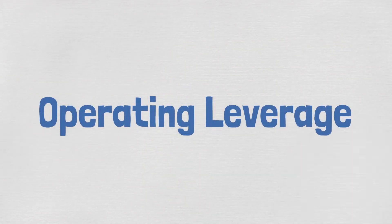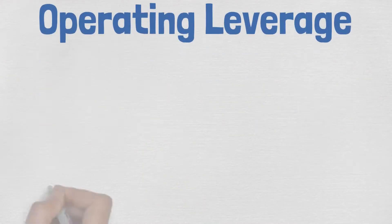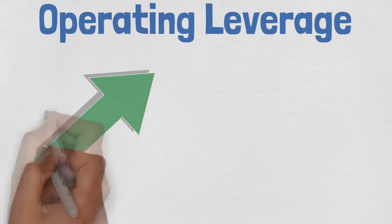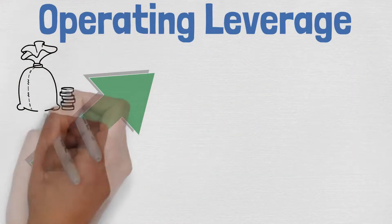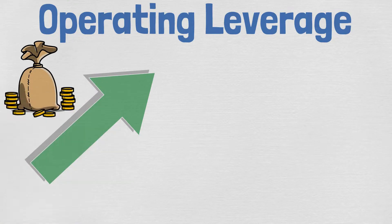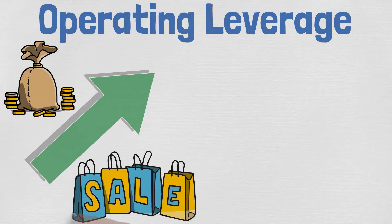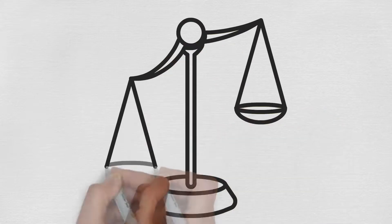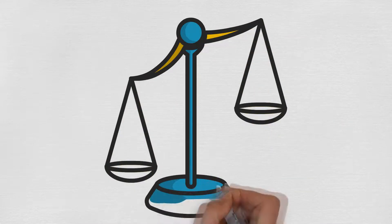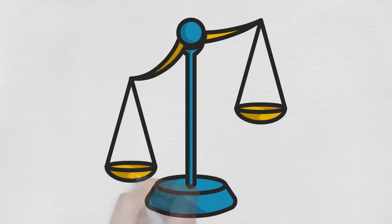Operating leverage tells us how much a company can increase its operating income by increasing revenue — in other words, how much of the company's costs are fixed costs. Basically, it shows us how sensitive the operating income is to the company's sales.